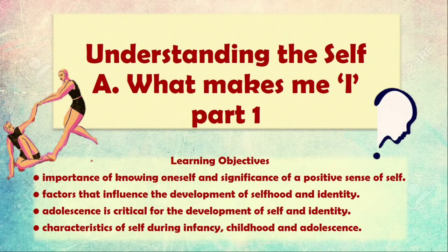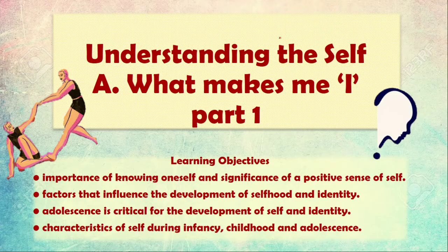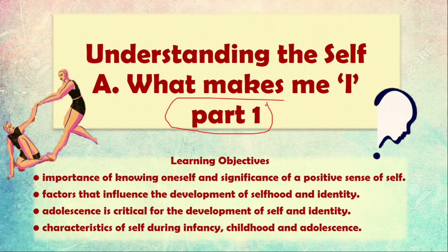Hey and welcome everybody to the second lesson of Home Science Class 11. Here we will be talking about understanding the self. This lesson is basically made up of three parts A, B and C. The A part is what makes me I. I is probably the most important word in the dictionary, but also the most confusing one. We are all confused about who we are, and especially during adolescence.